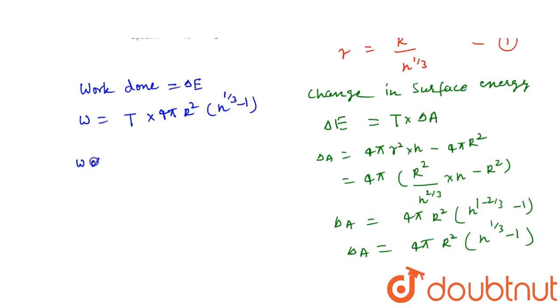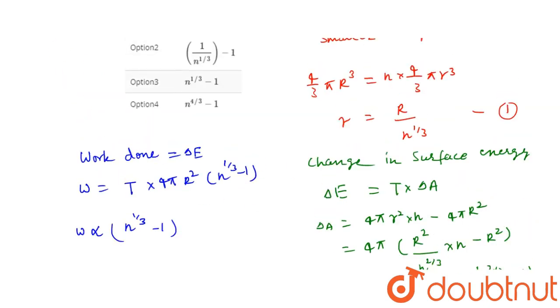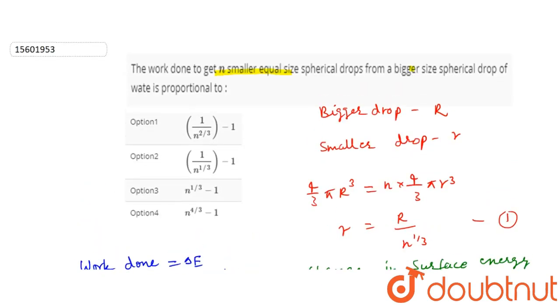Taking constant terms aside, we know that W will be directly proportional to (n to the power 1 by 3 minus 1). This is option 3. So work done is proportional to n to the power 1 by 3 minus 1. That is the third option, our required answer. Thank you.